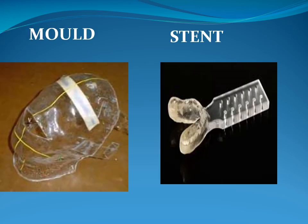Here you can see the mold prepared for the scalp and forehead. The second one is a stent particularly meant for tongue lesions and palatal lesions. It can be placed intra-orally and also helps to keep uninvolved areas away from the source of radiation.